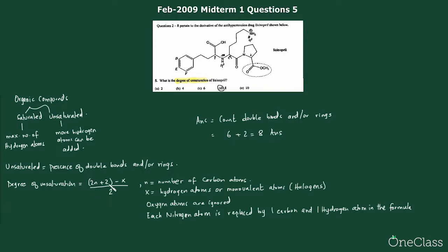Another way to calculate degree of unsaturation is through this formula: 2n plus 2 minus x divided by 2. Notice when I talked about saturated organic compounds, I said maximum number of hydrogen atoms. When a compound is saturated, it will contain 2n plus 2 number of hydrogen atoms, where n is the number of carbon atoms and x is hydrogen atoms. So a saturated compound will always have 2n plus 2 hydrogen atoms.